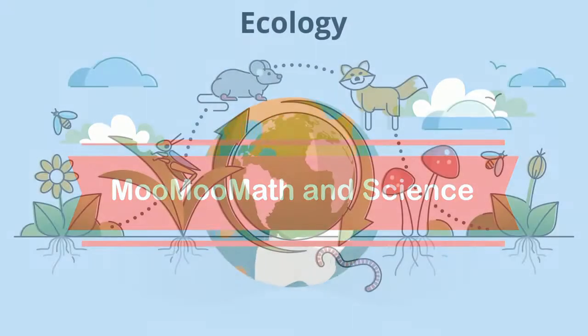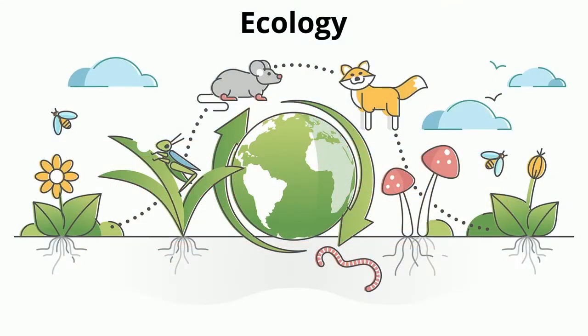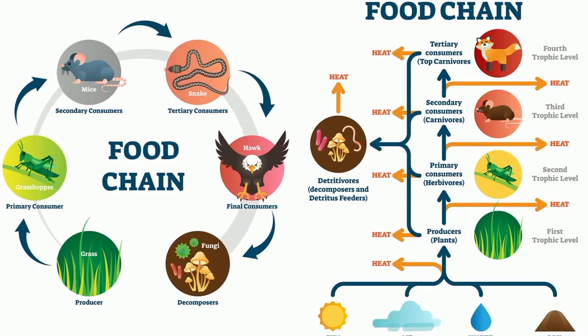In ecology, a food chain is a diagram that illustrates organisms that eat one another, so that energy and nutrients are transferred from one organism to the next.